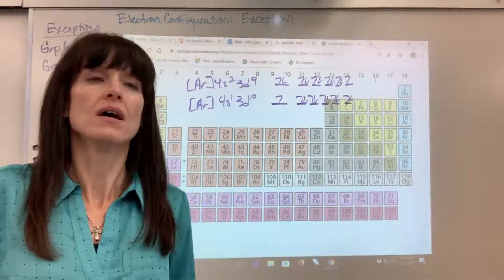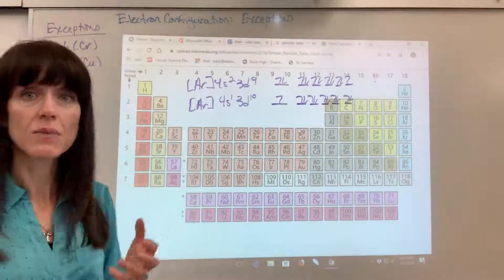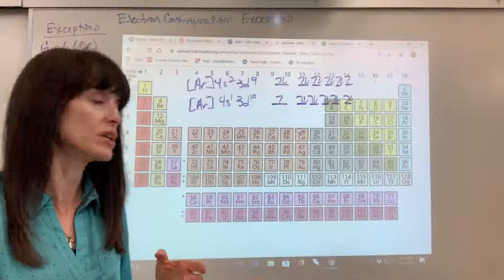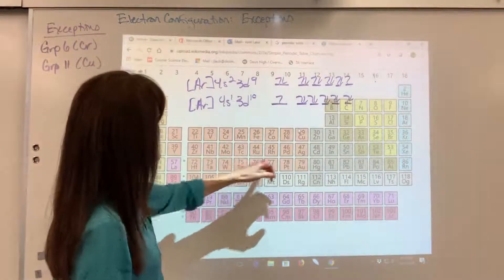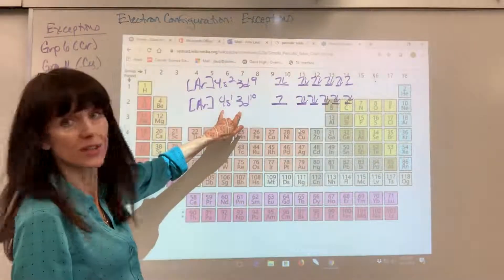And what's going to drive this energy, always, is going to be more energetically favorable. Now this is going to be the same electron configuration for, you're going to see copper, silver, and gold. All that changes are the energy levels.